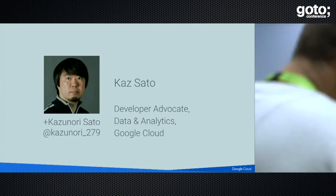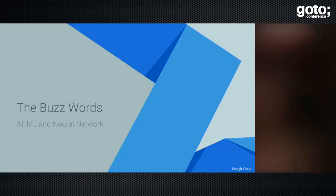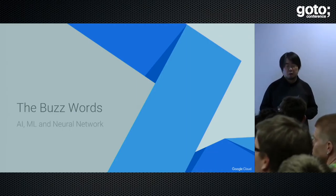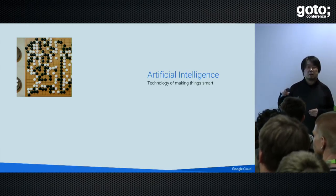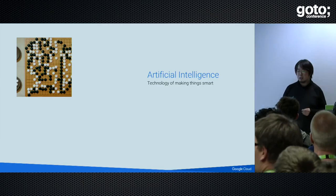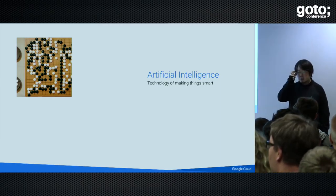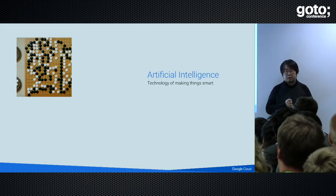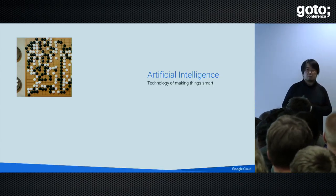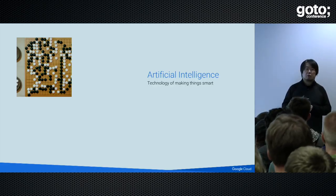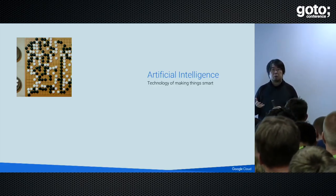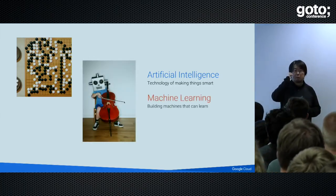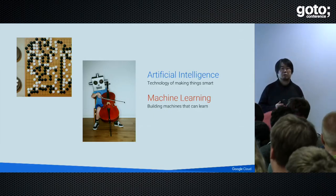I'm going around the world talking about machine learning. So what is machine learning, or AI, or neural network? There's no scientific perfect definition of what is artificial intelligence. But you can say it is a technology or technique to make things smart, make computers smart, like building an autonomous driving car or letting computers draw a beautiful picture. One of the approaches to realize the vision of AI is machine learning.